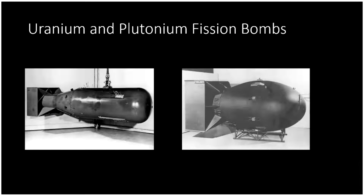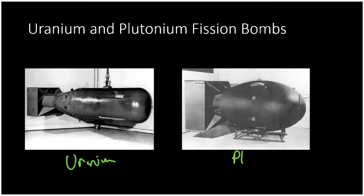Here you see two pictures of really famous nuclear bombs. On the left is Little Boy and on the right is Fat Man. These are two different types of bombs — the one on the left is made of uranium and the one on the right is made of plutonium. By the end of the video you'll understand why they have these different shapes. Let's start with the uranium bomb.